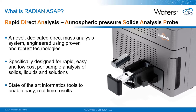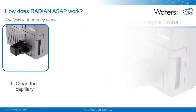The design of the hardware is backed up by cutting-edge informatics tools such as LiveID, which are designed to provide results quickly and easily with a minimum of training or mass spec knowledge required. The overall workflow for sampling and sample introduction on Radian ASAP is very simple and can be broken down into four easy steps.